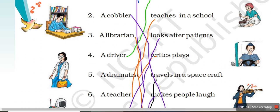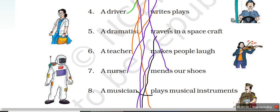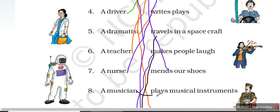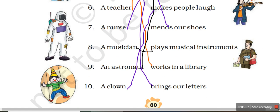A teacher is someone who teaches you in school. Next is the nurse — a nurse looks after patients. A musician plays musical instruments. Next is the astronaut — an astronaut travels in a spacecraft. And a clown makes people laugh. In this way, up to here we have completed our poem.